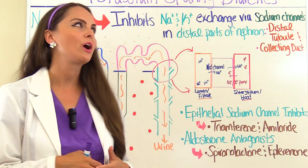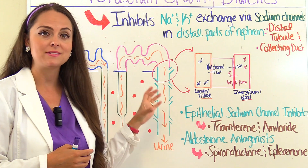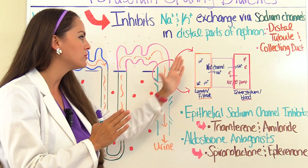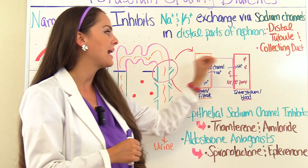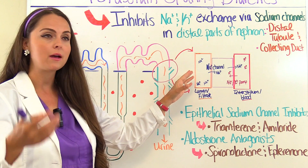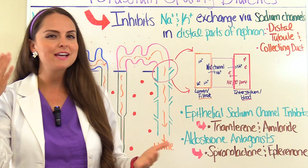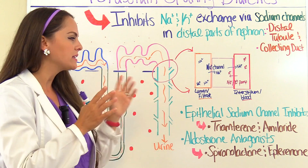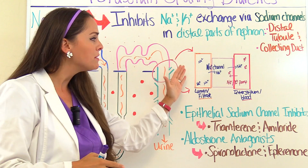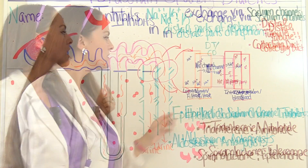Potassium sparing diuretics alter those sodium channels that make up the late part of the nephron — specifically the late distal tubule and the collecting duct. They're going to alter how sodium is actually reabsorbed out of the filtrate to go back into the blood. If we're keeping more sodium in the filtrate within that nephron, which is eventually going to become urine, we're going to keep more water with it, and that provides that diuretic effect. Let's look at the process of how those ions cross from the filtrate to go into the blood, because that's the process these drugs are manipulating.